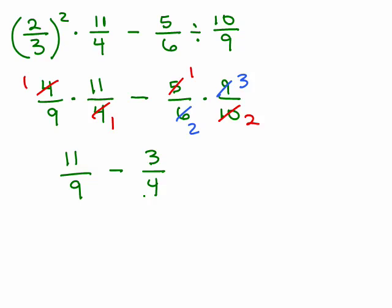Now, we have to do 11 ninths minus 3 fourths. There's different ways of doing this, but you do need a common denominator if you're going to use that method. So, 9 and 4 have nothing in common, so the least common denominator is going to be 36. So, if I multiply the left side by 4 over 4, I'll have 36, and the right side by 9 over 9, I'll have 36.